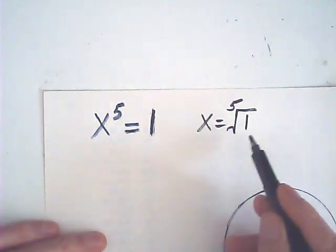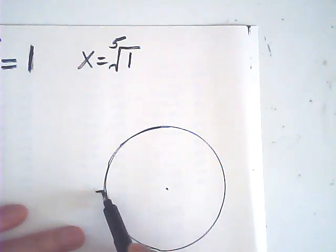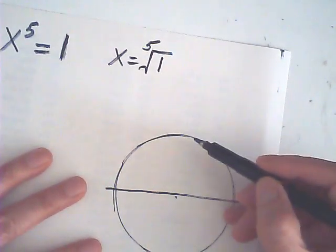Now, how do I find a fifth root of one? I'm using unit circle. This is unit circle. The radius is equal to one.